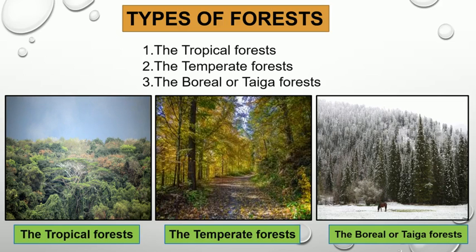The boreal or taiga forest, also known as snow forest. The boreal forest ecosystem is the connecting green belt of conifer and deciduous trees that encircle a large portion of the northern hemisphere.